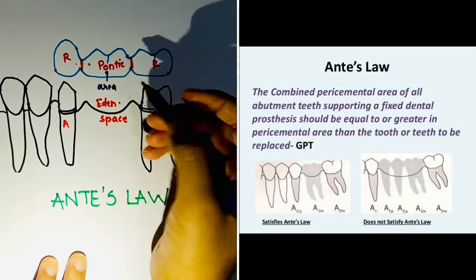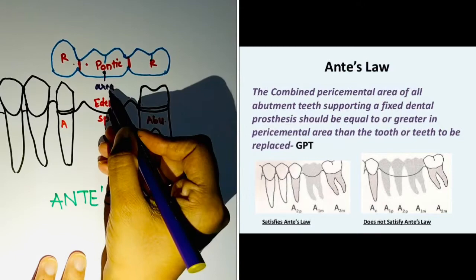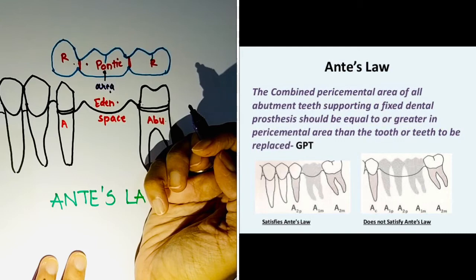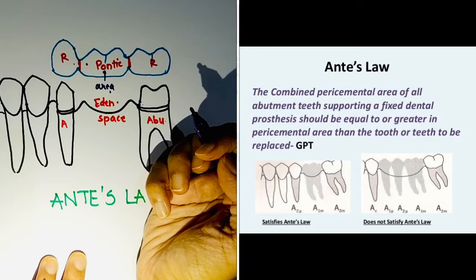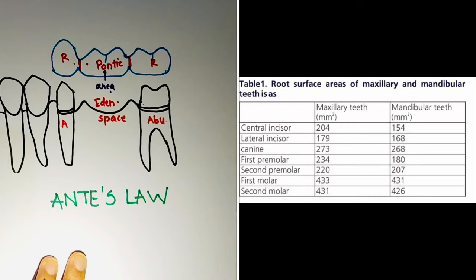In simple terms, the periodontal area of the abutments should be equal to or greater than the periodontal area of the tooth to be replaced. The periodontal area is nothing but your root surface area. According to the GPT definition, the periodontal area of the abutment supporting a fixed partial denture should be equal to or greater in periodontal area than the tooth or teeth being replaced. There is a chart available showing the periodontal area values determined by various studies.